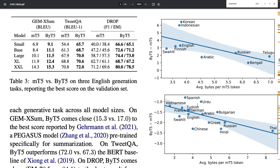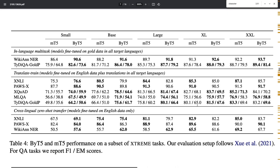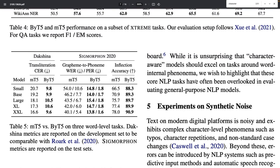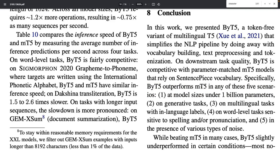The strength of ByT5 comes especially when considering tasks that are specifically sensitive to the character level of the sequences being processed, for example when the text is noisy. To sum up, ByT5 outperforms mT5 when the model size is below one billion parameters, on some generative tasks, on multilingual tasks with in-language labels, and on word-level tasks sensitive to spelling and pronunciation and in the presence of various types of noise.